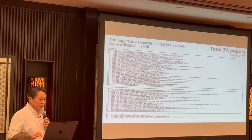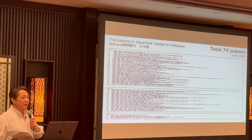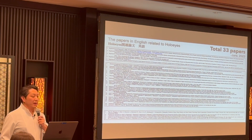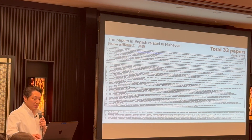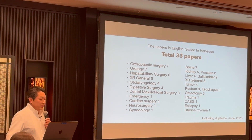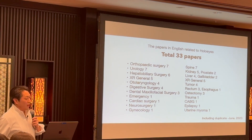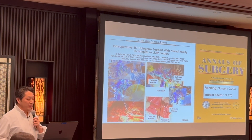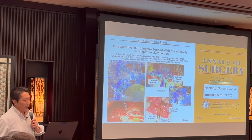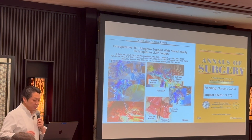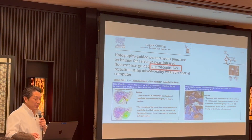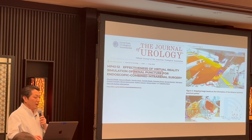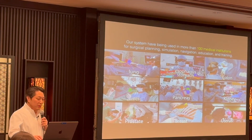We have a systematic review: more than 74 papers in Japan and more than 33 English papers have already been published about HoloEyes. These cover orthopedic surgery, urology, hepatobiliary surgery, otolaryngology, digit surgery, and more. The highest impact factor publication — 9.4 — was an analysis of liver cancer surgery by Tokushima University. Other publications cover colorectal cancer, pancreatic cancer, linear puncture, and learning curve models.